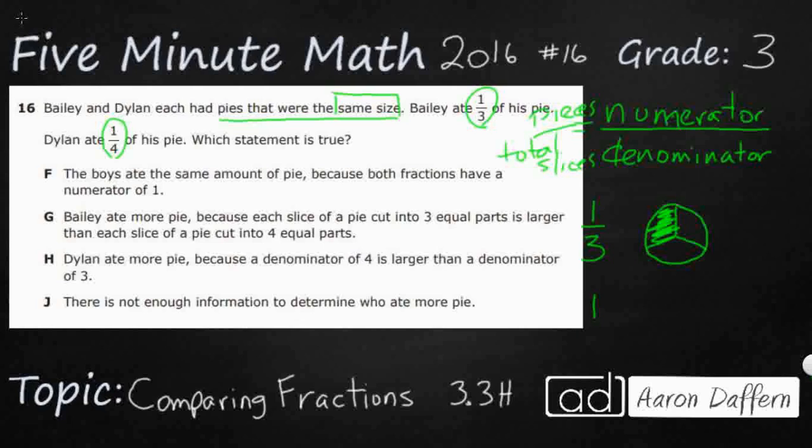Now we have Dylan with one-fourth. That means one piece, but there are four total slices, so the denominator is bigger. I'm going to try to draw my circle about the exact same size. So I'm going to draw this right here. And then the question is, which statement is true?